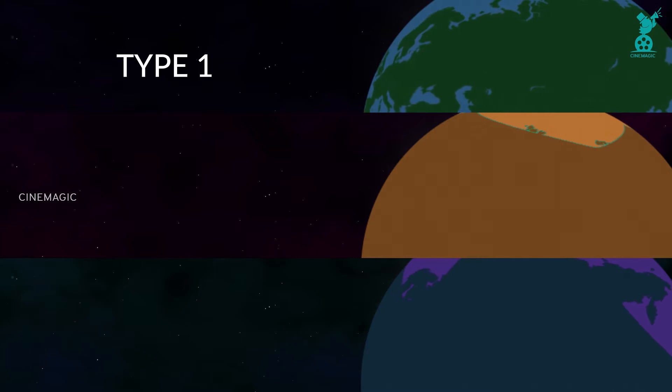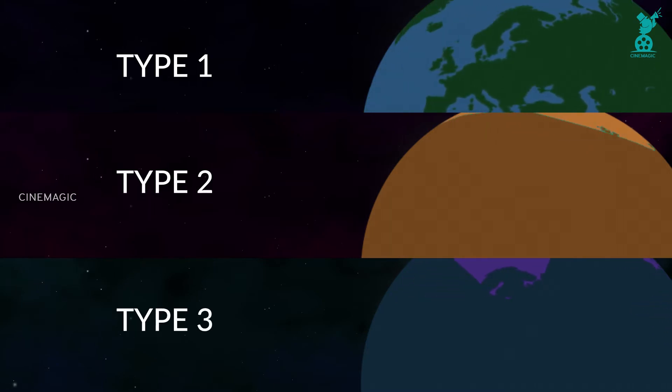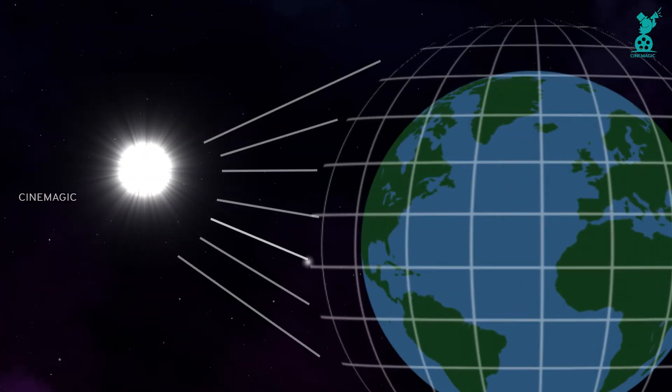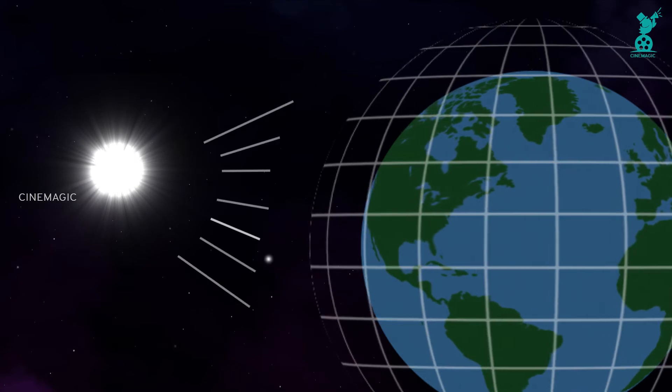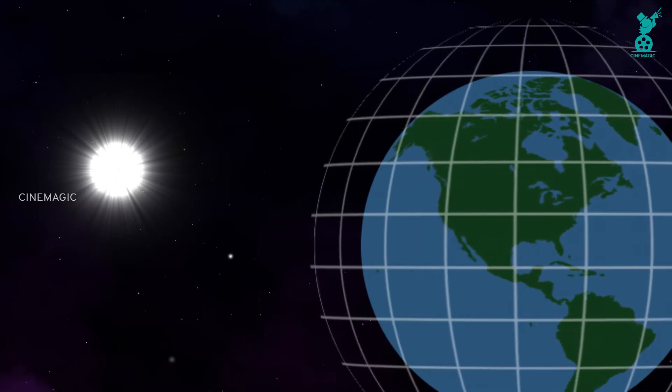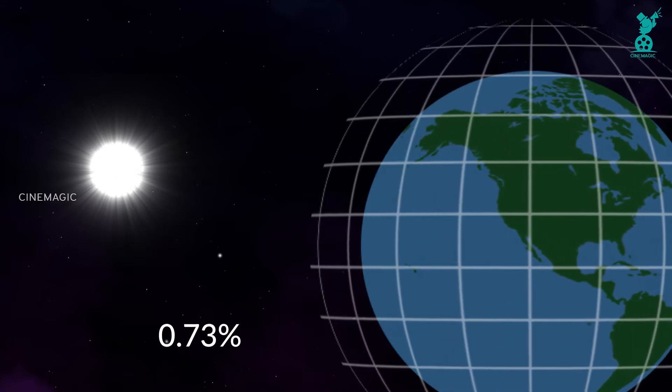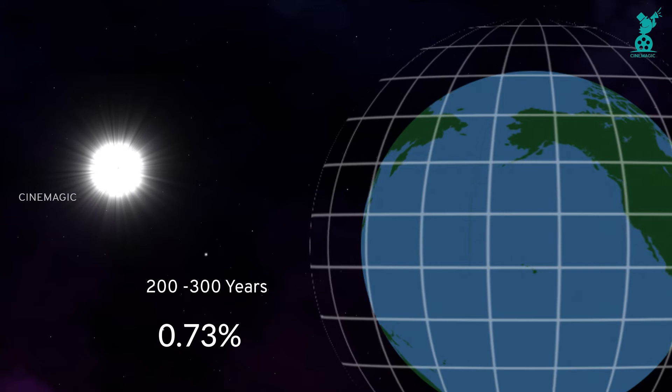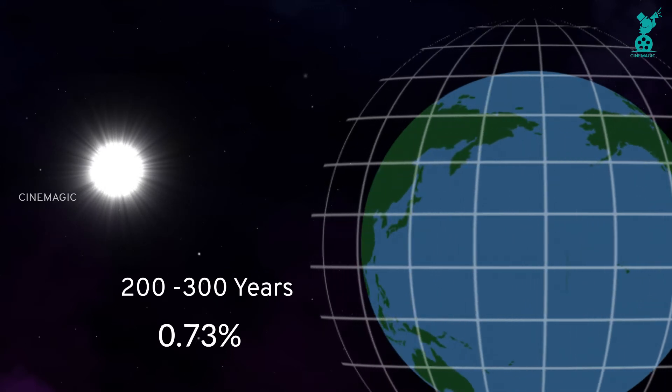Type 1 civilization, Type 2 civilization, Type 3 civilization. Type 1 civilizations will have the ability to use all the energy sources from their stars and nature. We have achieved self-sufficiency of only 0.73% in this category. That is, humans can reach Type 1 civilization only after 200 to 300 years.